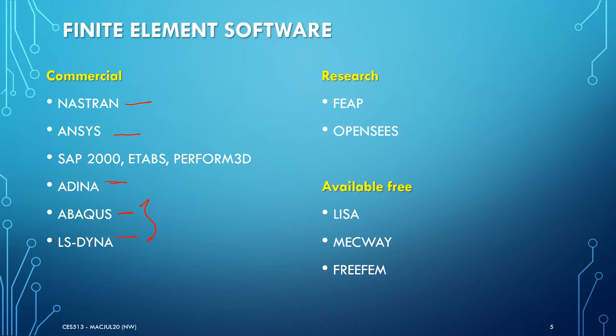Besides commercial software, there are several research groups that have contributed to open source finite element codes. These programs are primarily aimed at researchers and educators. Two interesting and popular open source programs are OpenSees and FEniCS. Many researchers use these two software in their research studies. There are also freely available finite element software nowadays, for example Lisa, Mekwe, FreeFEM, and many others.